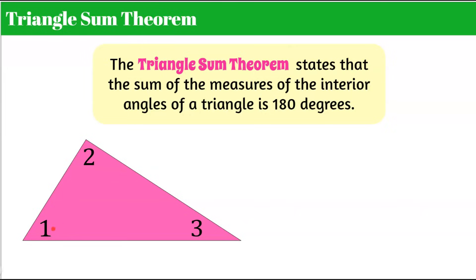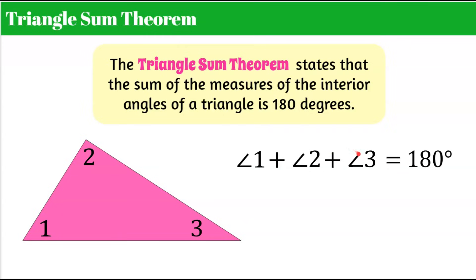When I consider these three angles and add them together — angle one, add angle two, add angle three — they must have a sum of 180 degrees. If I add up the three angle measures and it does not equal 180 degrees exactly, then it is not a triangle and somebody is trying to trick you.